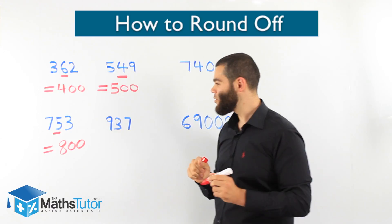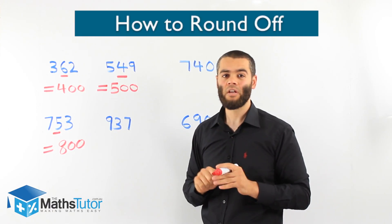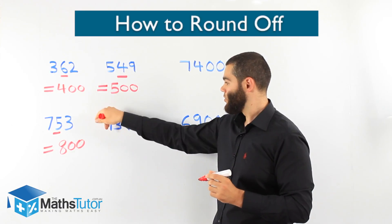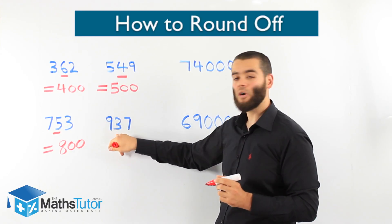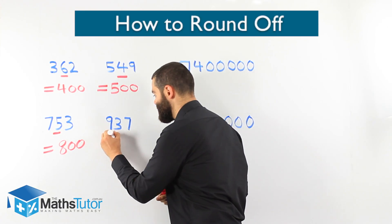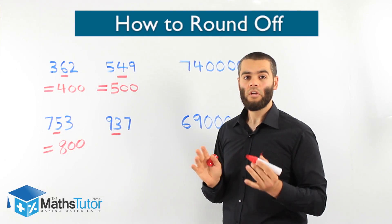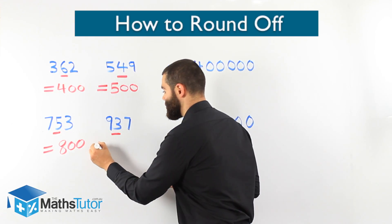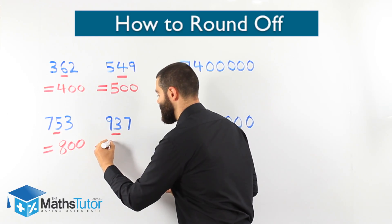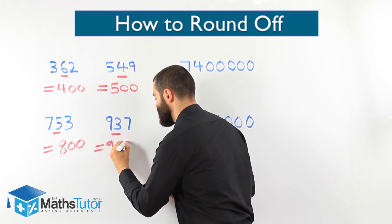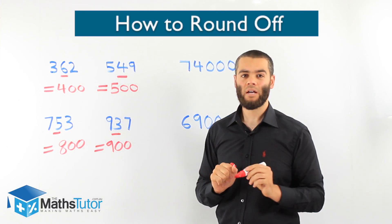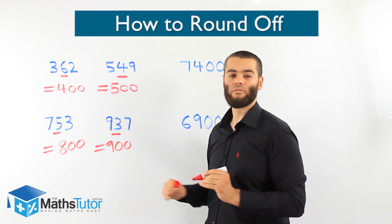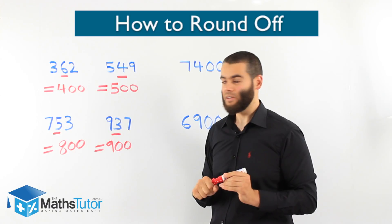Another example: 937. Round off to the nearest hundred. This is our hundreds column. We look to the number on the right and we ask: are you 5 or more? No, not 5 or more — it's actually less. That means we have to round down. So 937 to the nearest hundred becomes 900. It doesn't have enough muscles to push up, so we have to round down.